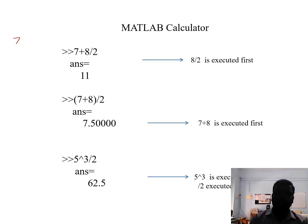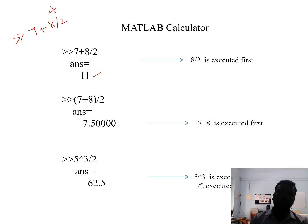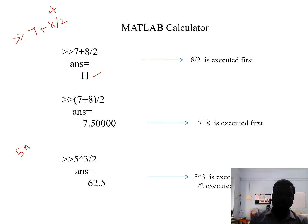Using MATLAB as a calculator: for the expression 7 + 8 / 2, the right division has third-order precedence so it is evaluated first — 8 / 2 = 4 — then added to 7, giving 11. For (7 + 8) / 2, parentheses have first priority so 7 + 8 = 15 first, then divided by 2. For 5^3 / 2, the exponential is evaluated first: 5^3 = 125, then divided by 2, giving 62.5.